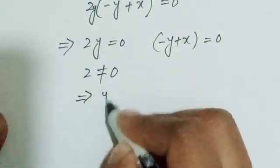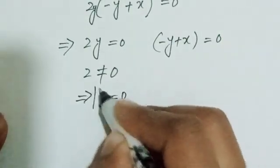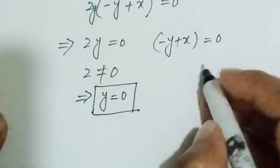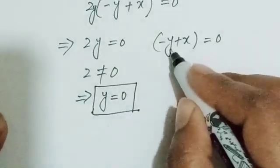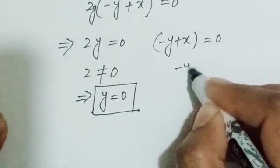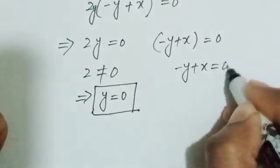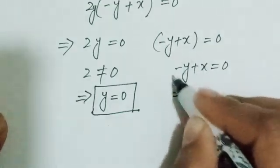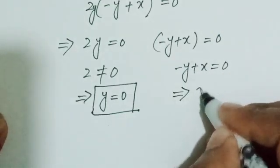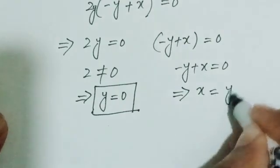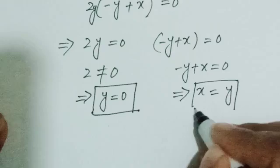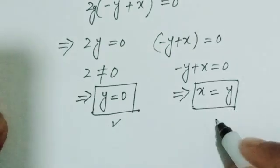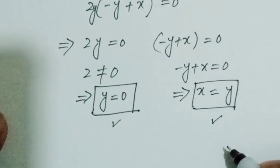So y equals zero is our first root. From the second factor, minus y plus x equals zero, shifting minus y to the right-hand side gives x equals y. So our two solutions are y equals zero and x equals y.